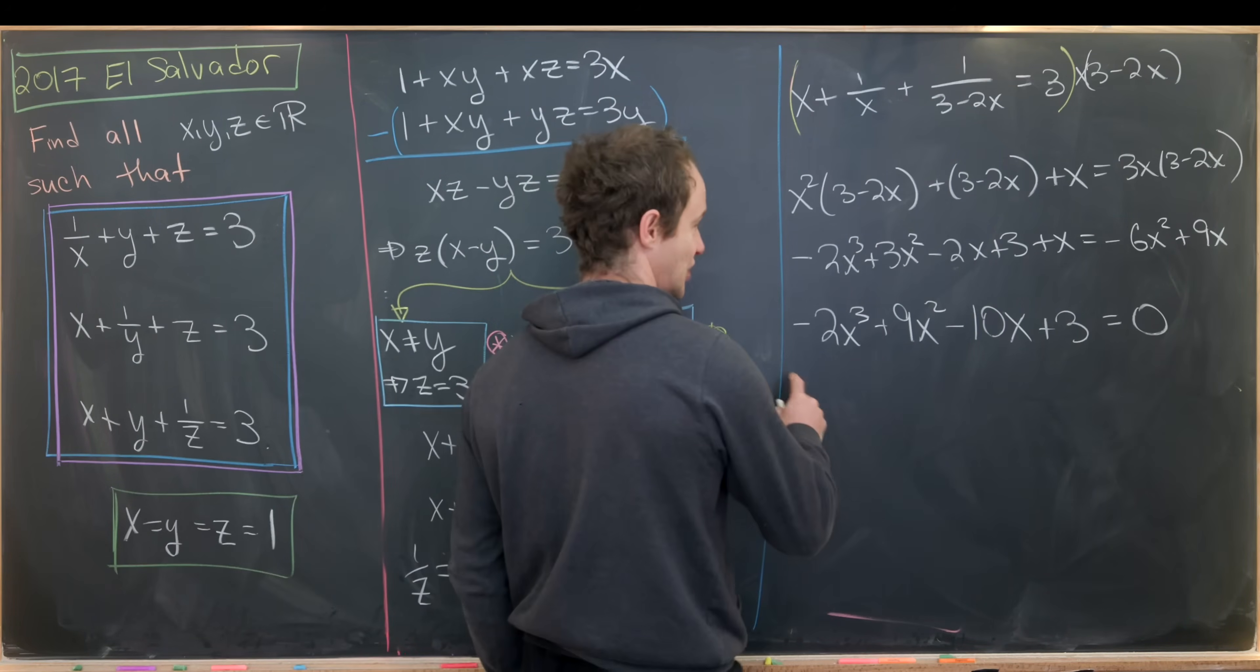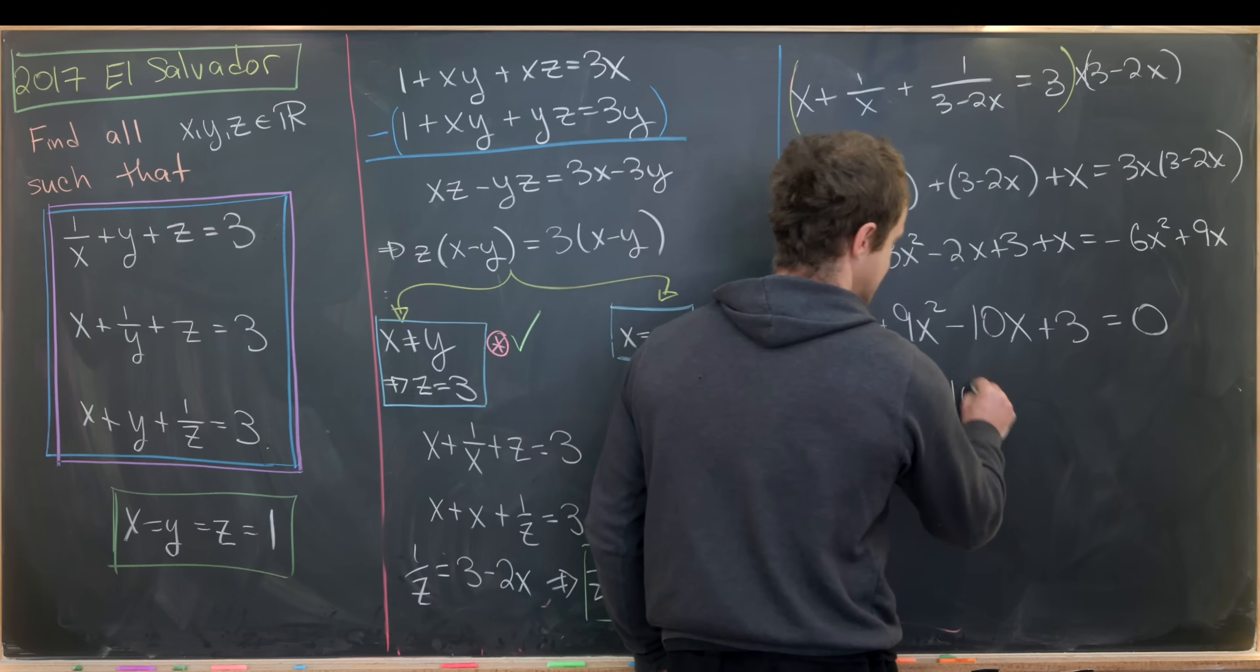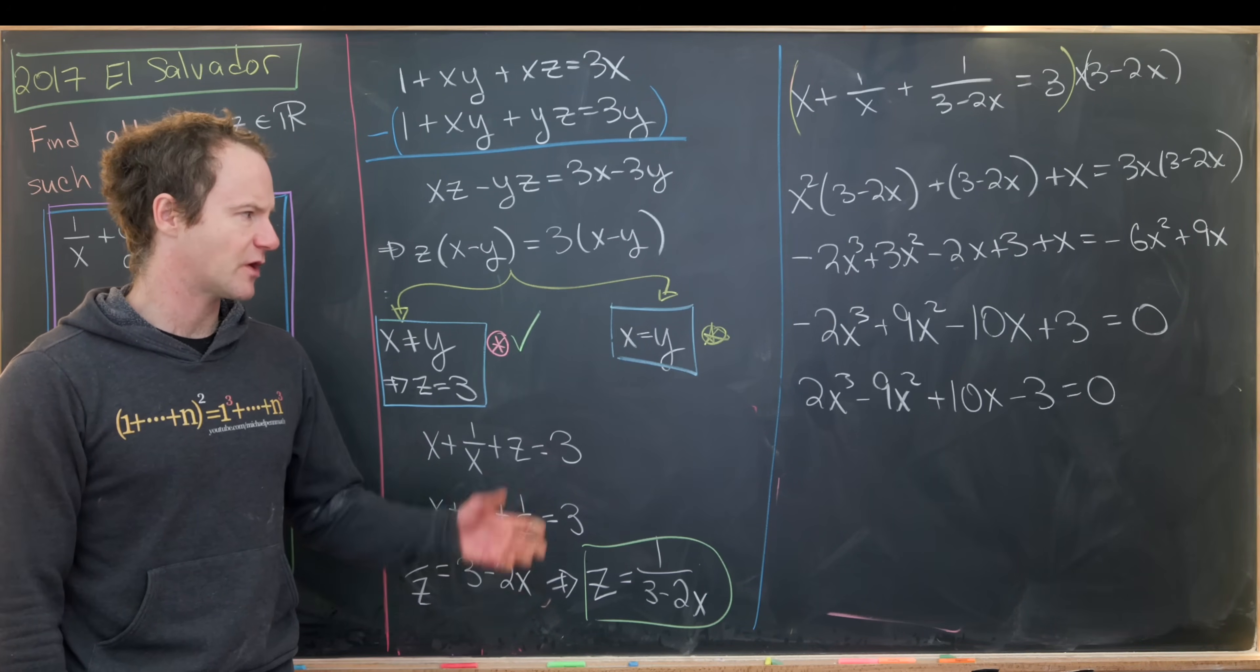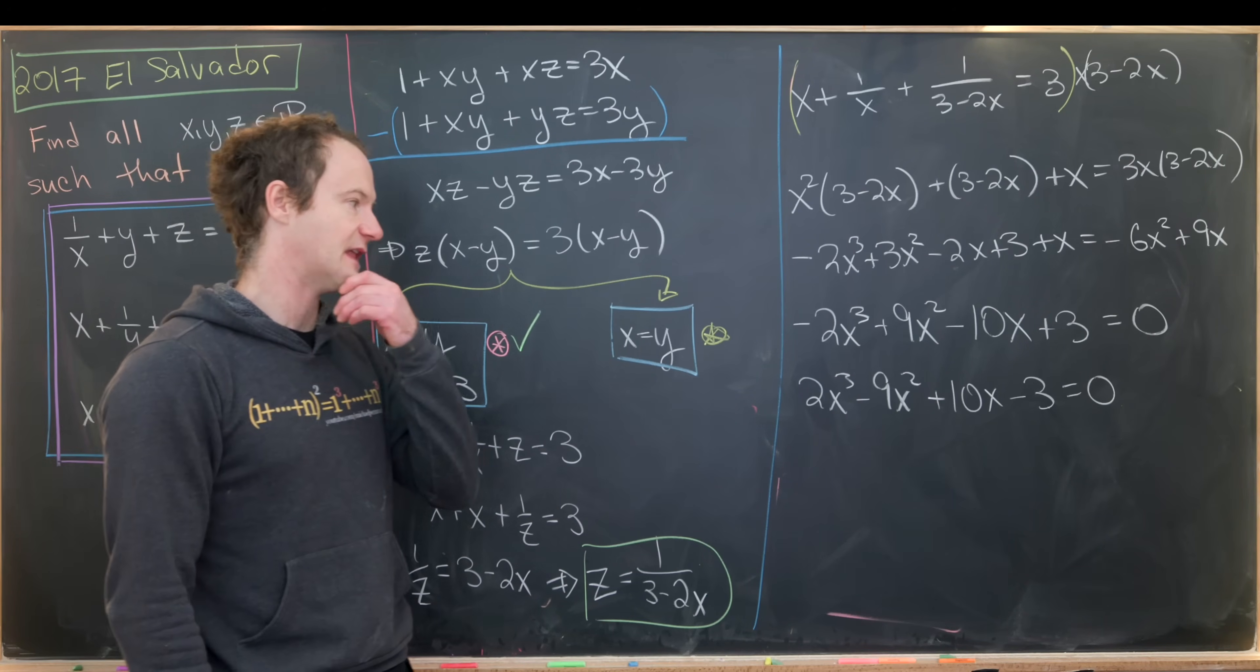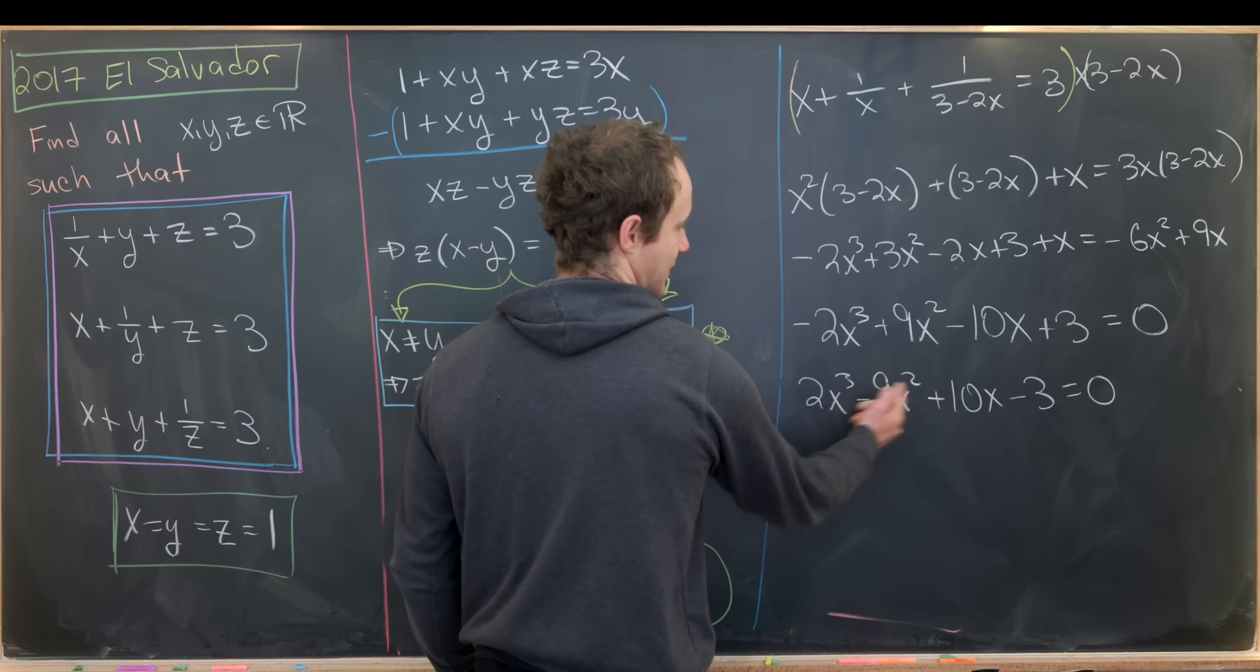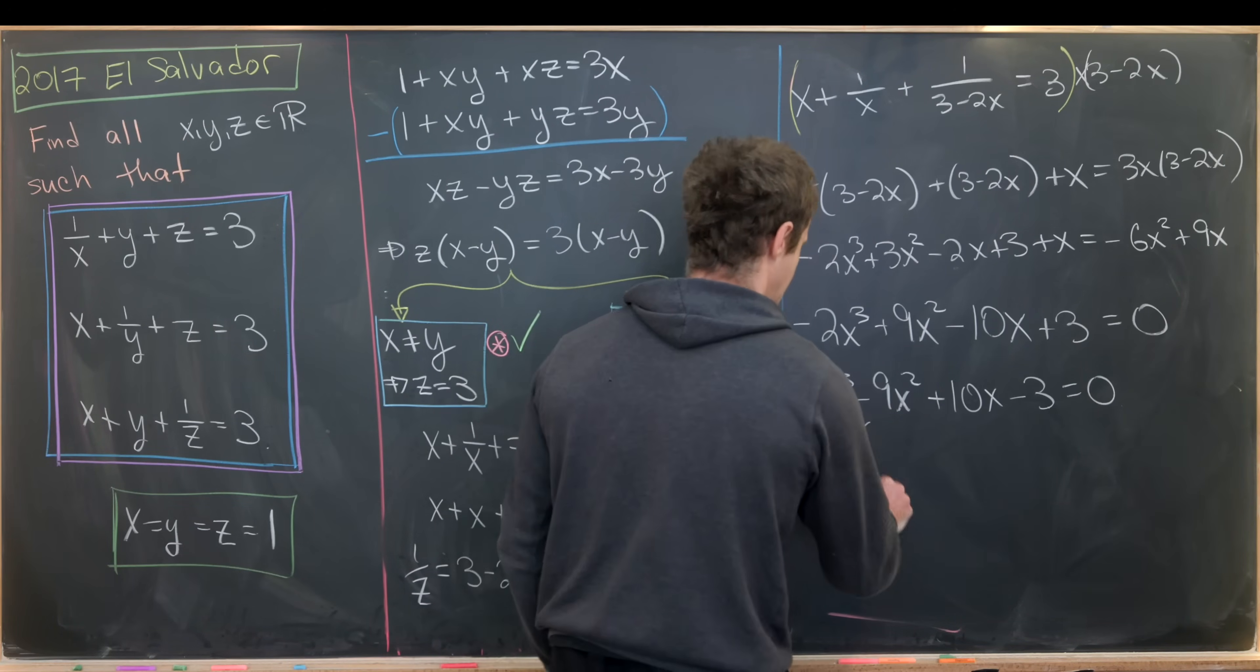It's probably advantageous to change the sign, multiply this whole thing by negative 1, leaving us with 2x cubed minus 9x squared plus 10x minus 3 equals 0. Now this is a cubic, cubics are generally hard to solve, but hopefully there's a rational root that would help us out. And there is a rational root, and that will occur at x equals 1. Notice if x is equal to 1, then we have 12 adding up from this, minus 12 from that, and so that'll give us a 0. So that means we should be able to factor an x minus 1 out of this.